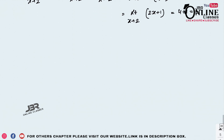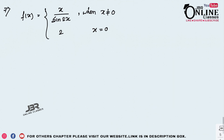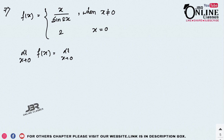Sum 7: Is the function f defined by f(x) = x / sin(2x) when x ≠ 0, and 2 when x = 0, continuous at x = 0? We compute the limit as x tends to 0 of x / sin(2x).